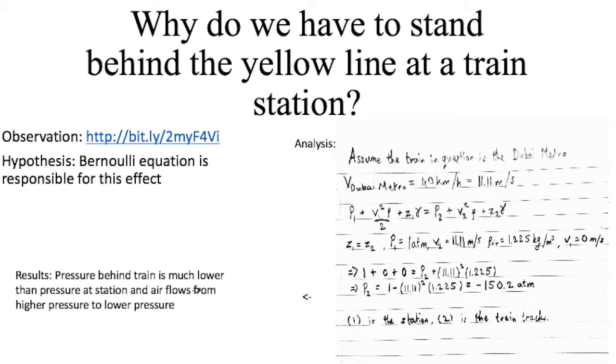And after solving for all the unknowns, we find that P2 is negative 150.2 atmospheres. One is the station and two is the train track.